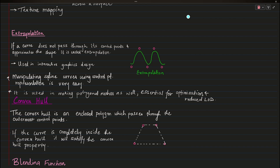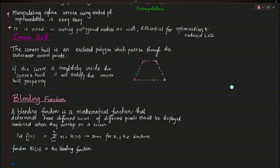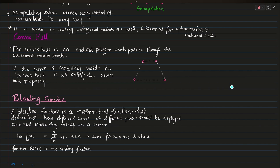Extrapolation is used in making polygonal meshes and is essential for optimization and level of detail. Now, the convex hull property basically means that the control points form a hull around the curve I'm drawing. If the curve is completely inside the convex hull, it satisfies the convex hull property.